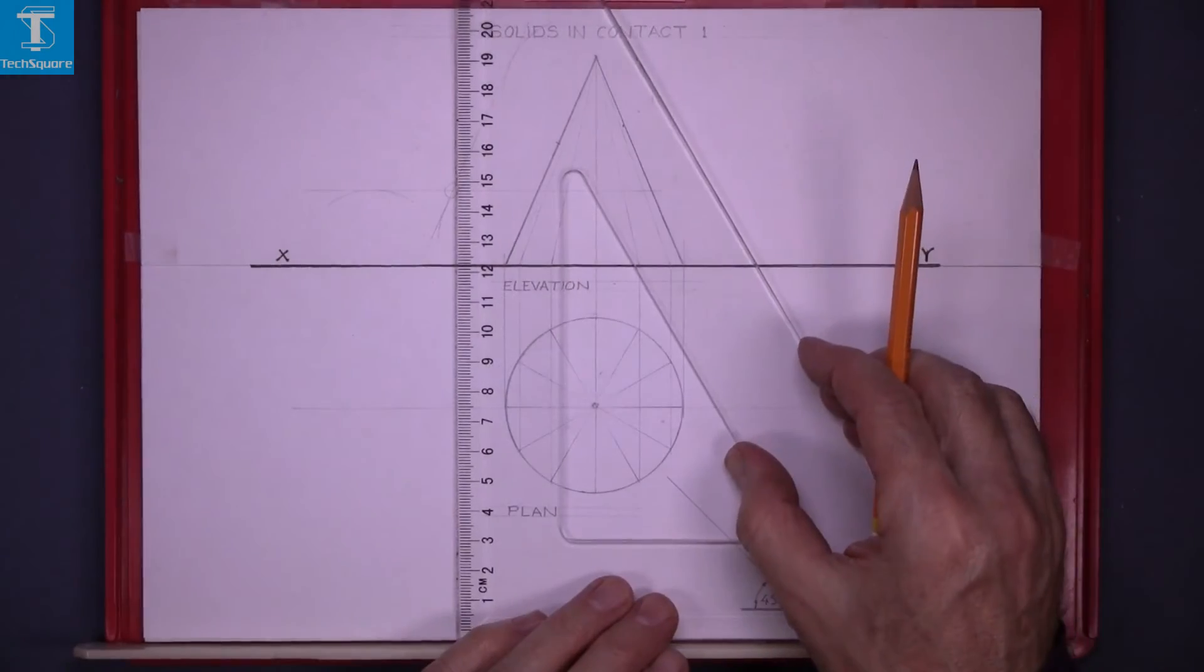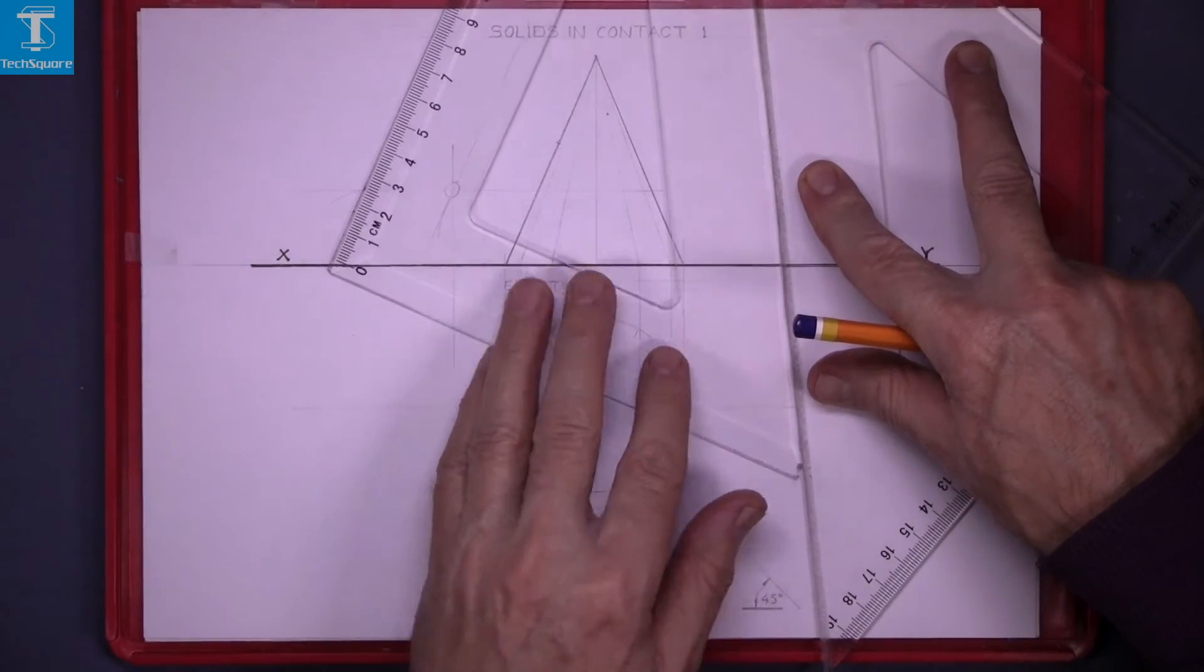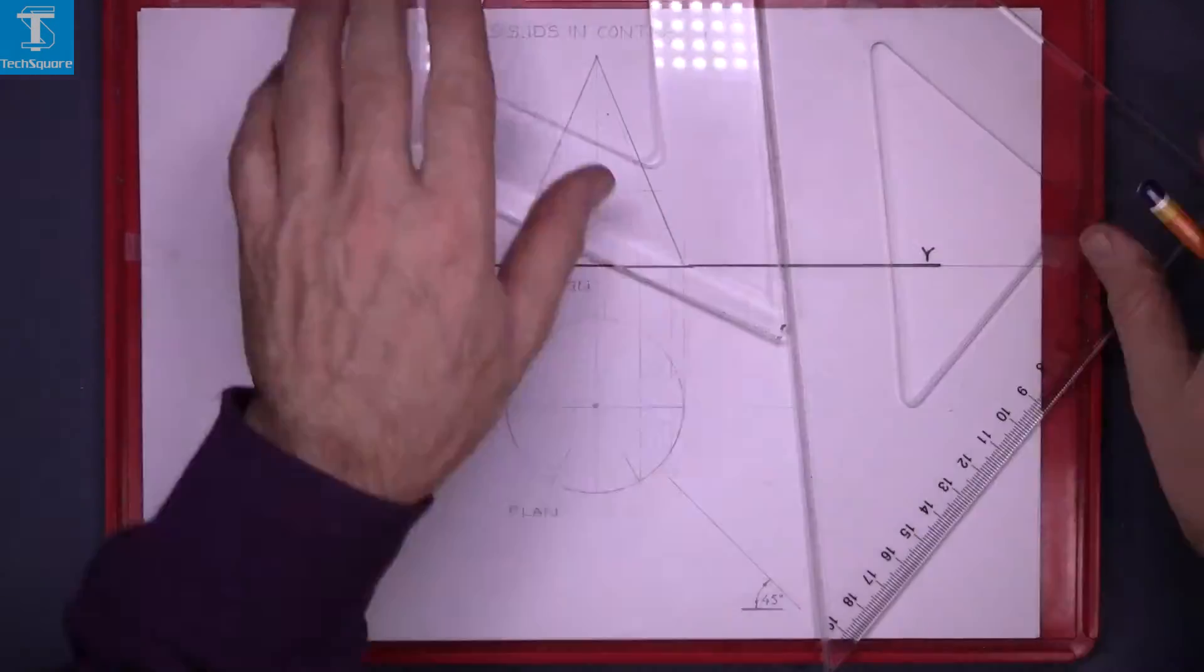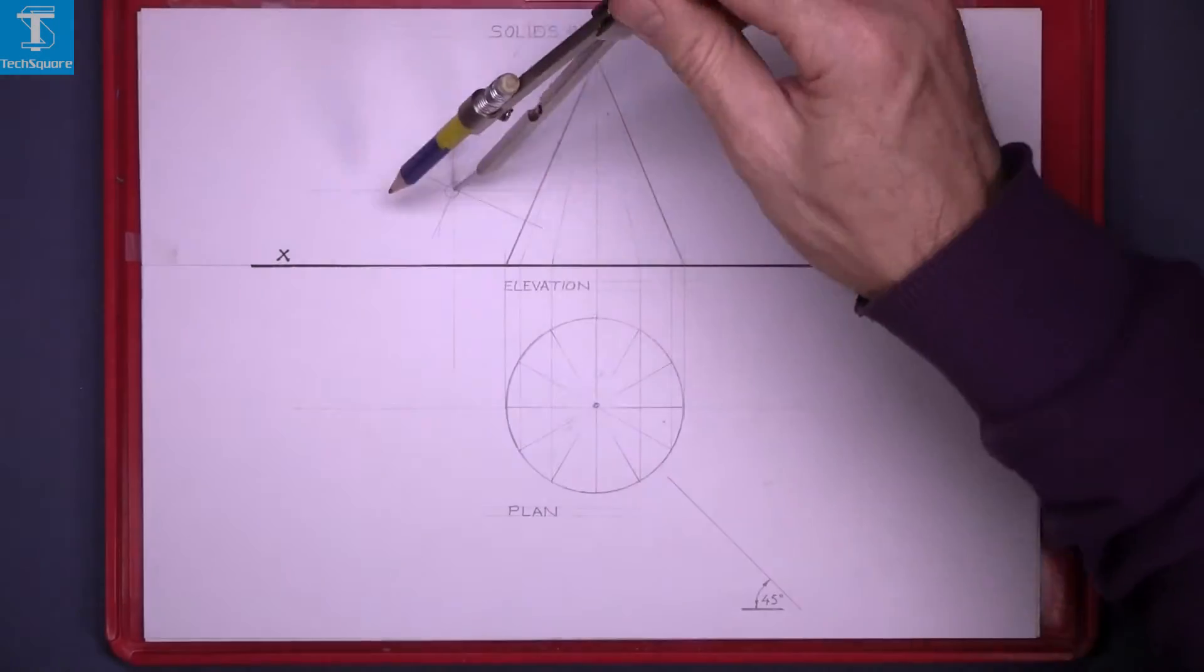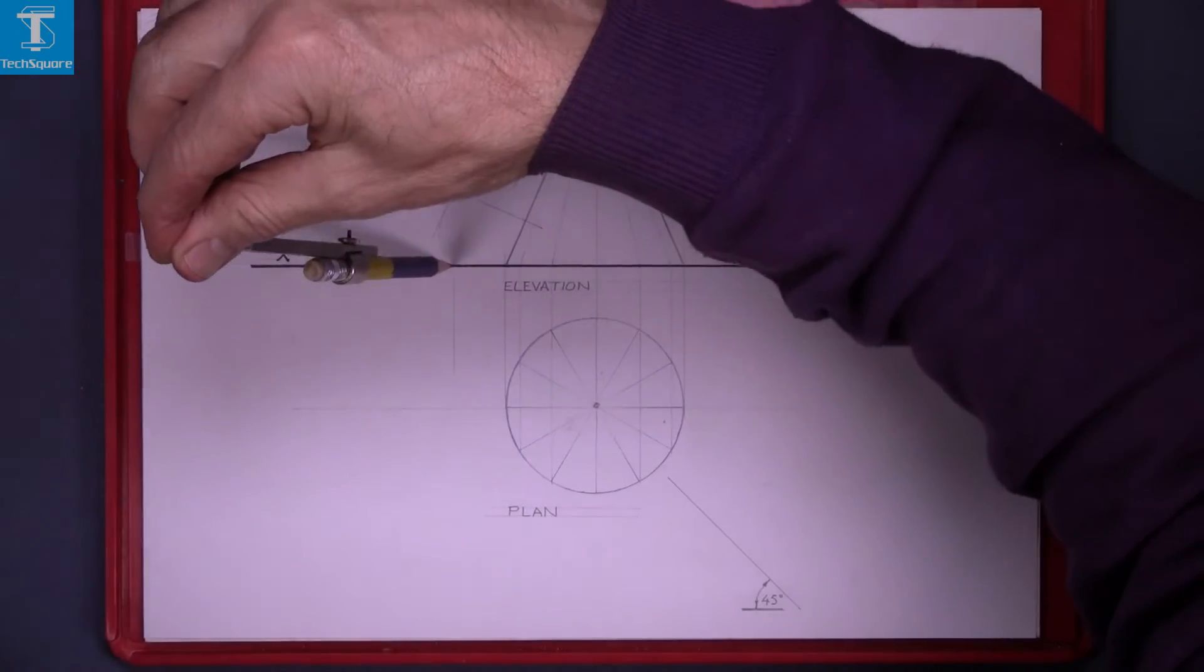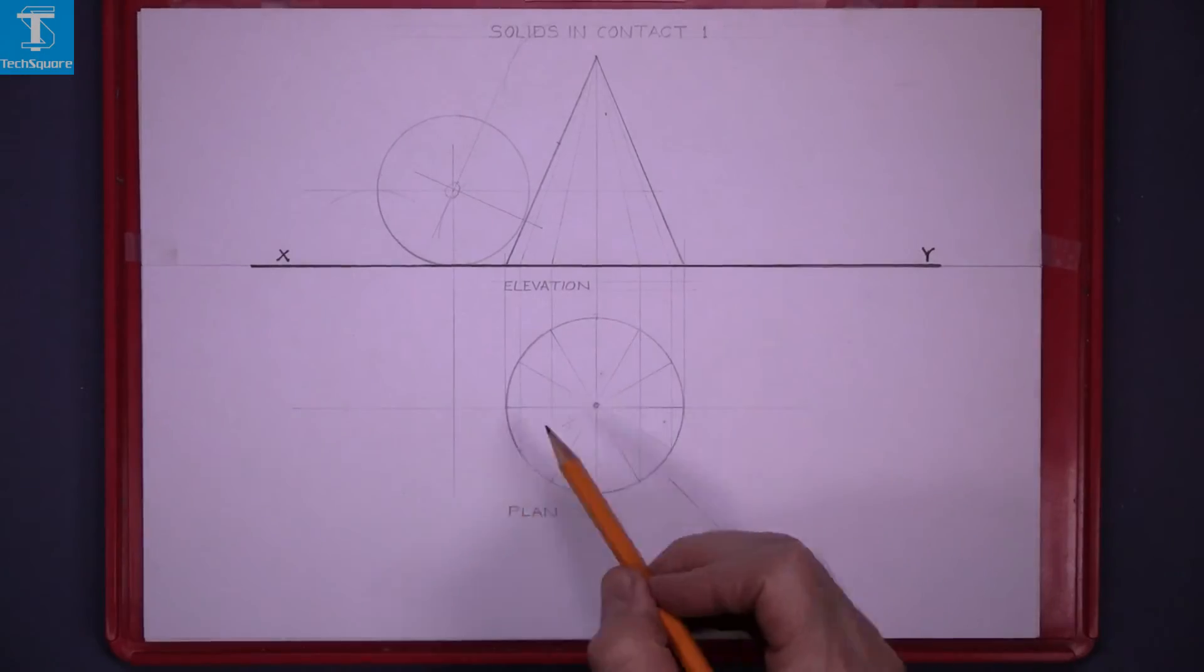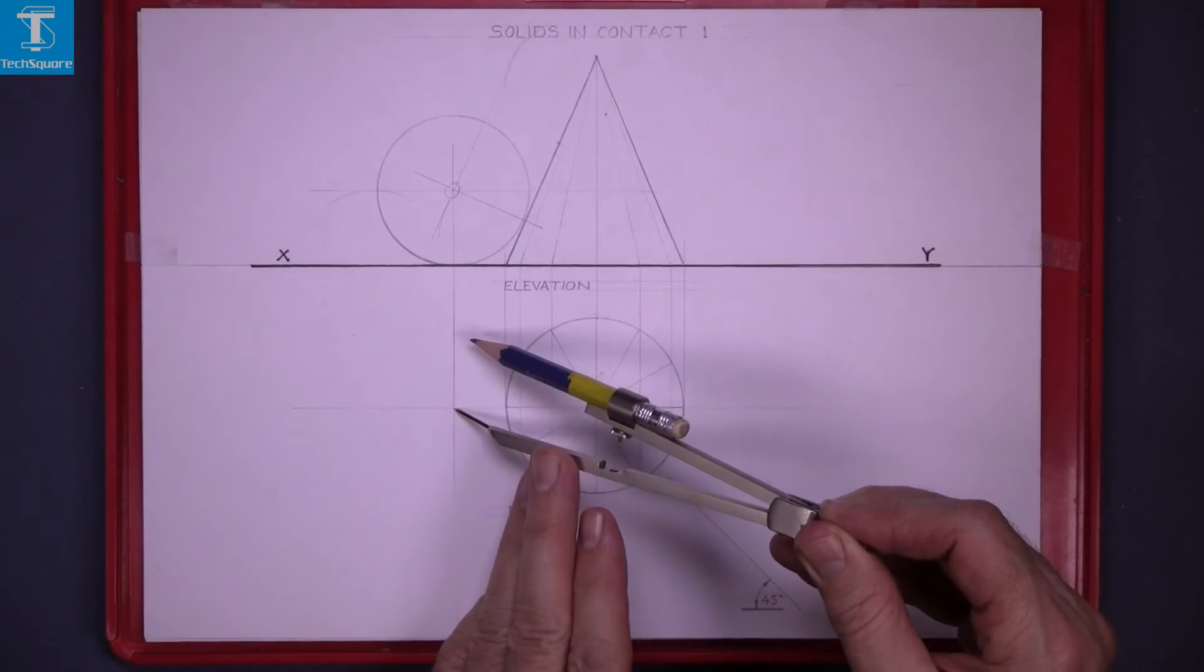Draw vertically down - that gets the point of contact between the cone and the sphere. Compass set to the radius of the sphere, draw the circle. Now to get the plan, draw vertically down and horizontally across, and with the same radius draw the plan.